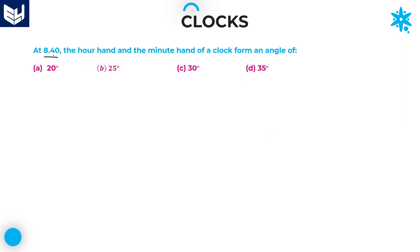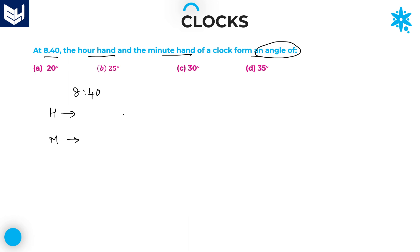At 8:40, the hour hand and minute hand of a clock form an angle of — here we need to find the angle between the hour hand and the minute hand. In order to solve these kinds of problems, there is no need to use formulas. I will explain the problem without using a formula. The time period given is 8:40.